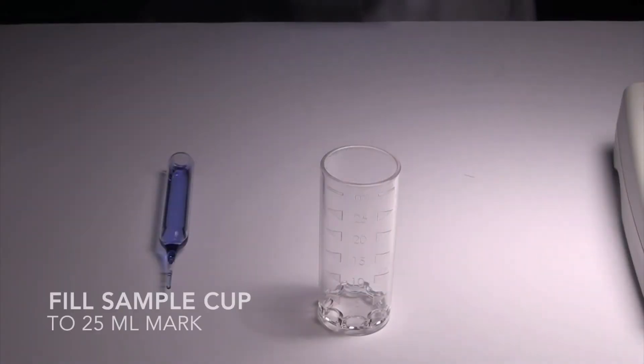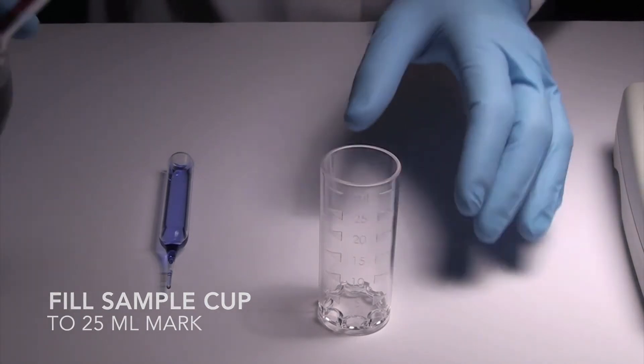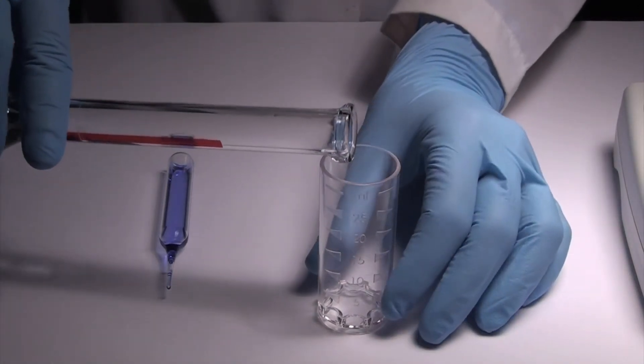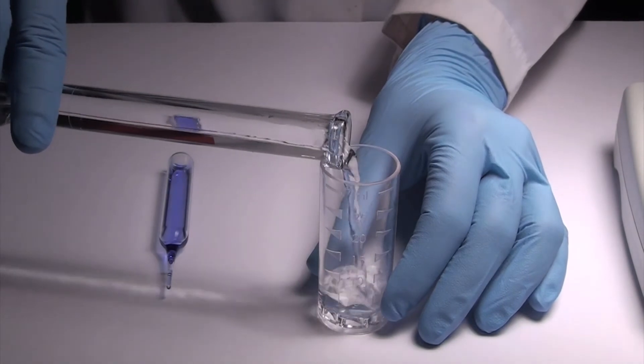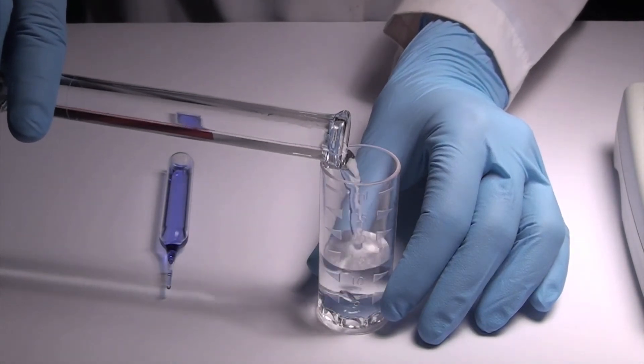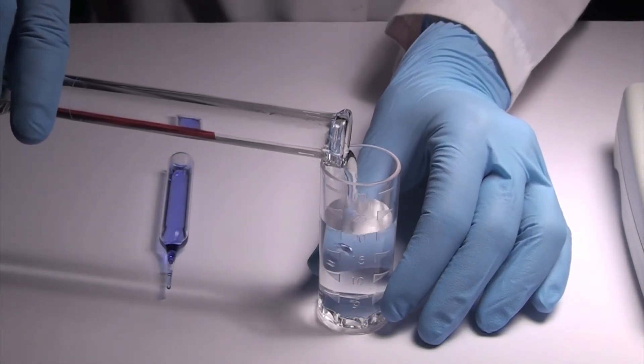Then, measure the ozone in the sample. Fill the sample cup to the 25-milliliter mark with the sample to be tested, being careful to minimize turbulence. Ozone loss from sample occurs rapidly, so do not transfer sample to other containers.